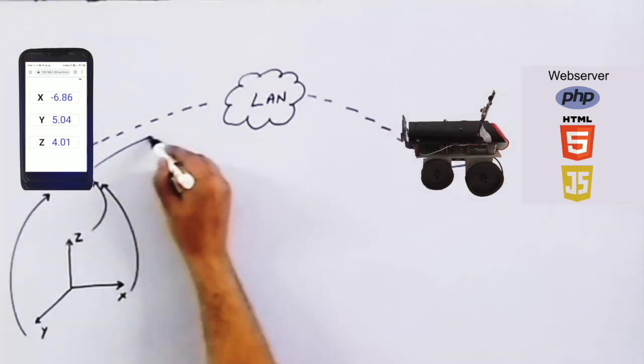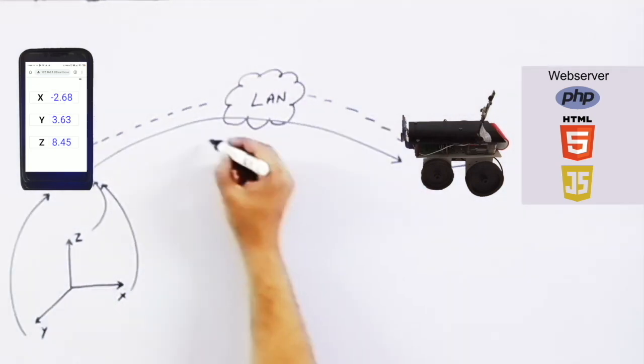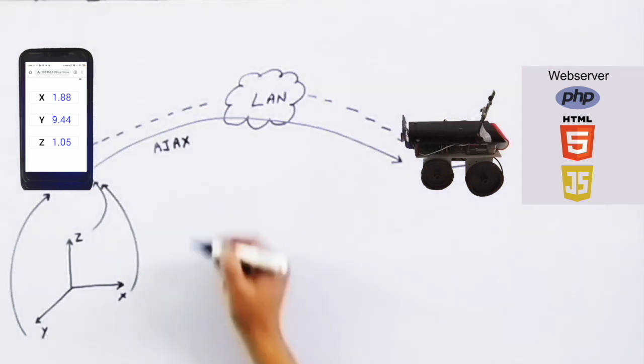Further, this captured data is sent back to the server via background Ajax calls. This entire process repeats itself four times in a second and updates the server with device current orientation.